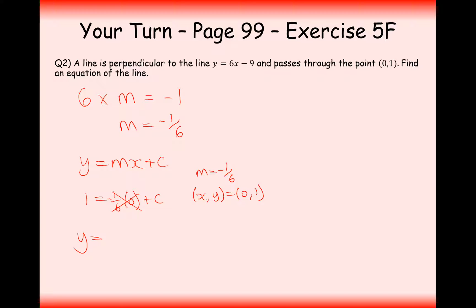My final answer here is going to be minus a sixth x plus 1. And that kind of makes sense because 0, 1 is going to be the y-axis intercept. And I know it has a gradient of negative a sixth, so it's going to be a flat straight line that's decreasing at a rate of 1 over 6 for every 1 we go across to the right.